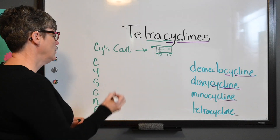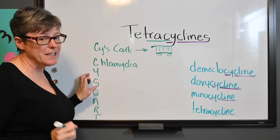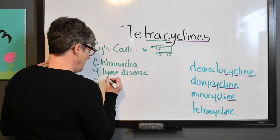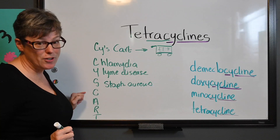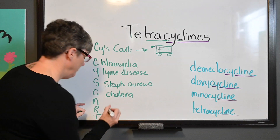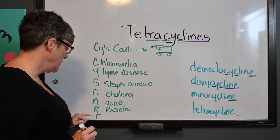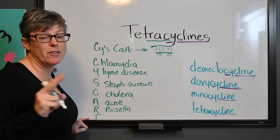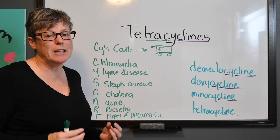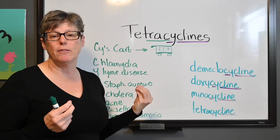SYZECART — each one of these letters stands for a diagnosis your patient may have while being on tetracyclines. S is for chlamydia, Y is for Lyme disease, Z is for staph aureus infections, the second C is for cholera, A is for acne, R is for rickettsia, and T is for types of atypical pneumonia. Just by looking at the letters the word gives you, you can recall a lot of information.